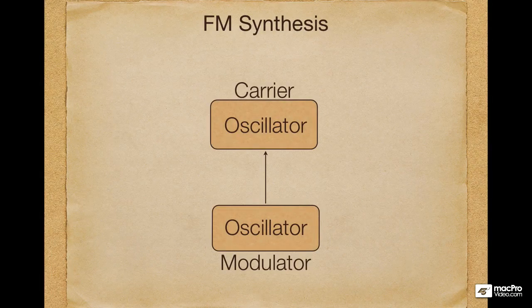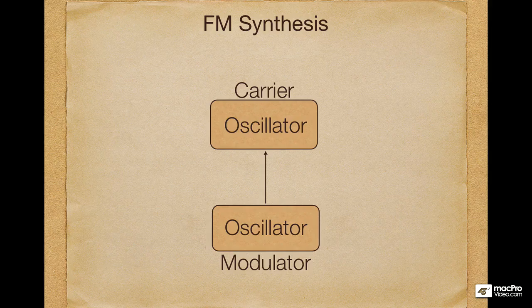In FM synthesis, the relationship between the carrier and the modulator is very important. Generally, integer ratios will create pleasing sounds. That means if the carrier is 100Hz, the modulator can be 100, 200, 300, and so on.